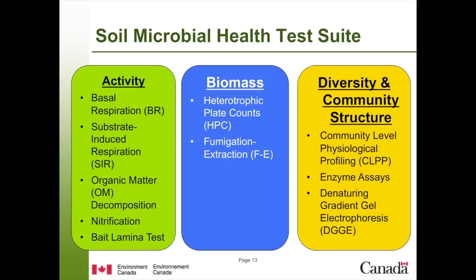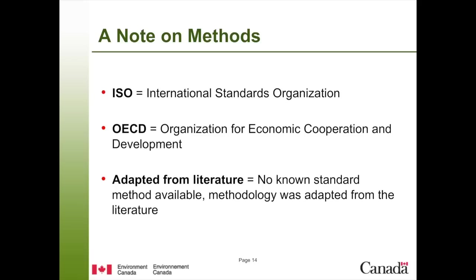I'll go through each of the different methods we used in our test suite. Under activity, we looked at basal respiration, substrate-induced respiration, organic matter decomposition, nitrification, and the beta-lamina test. Under biomass, we looked at heterotrophic plate count and fumigation extraction — though fumigation extraction is really a method to determine microbial organic carbon in the soil, used with basal respiration to express results as CO2 produced per microbial organic carbon. For diversity and community structure, we used community-level physiological profiling, enzyme assays, and a genomics technique — denaturing gradient gel electrophoresis. These methods are ISO or established methods, or adapted from the literature.